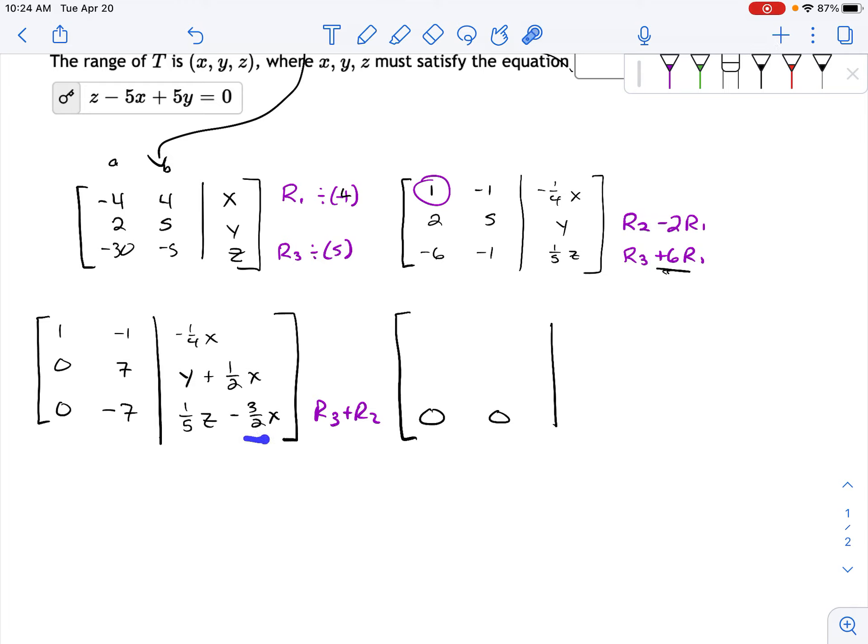and then let's see. I'm going to do this in order x, y, z. So you add these together, so you get minus x, you get plus y, and then you get plus one-fifth z.